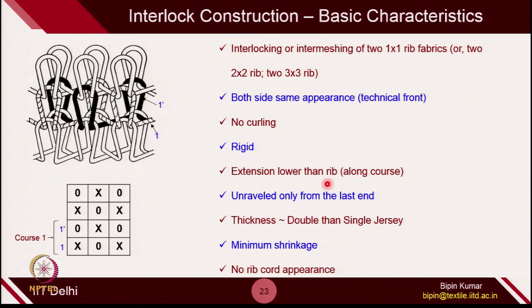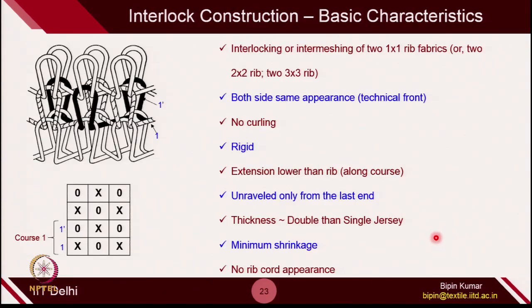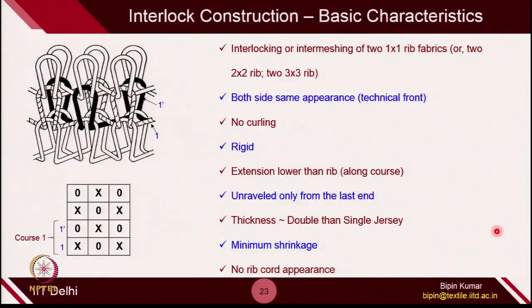Extension in interlock is much lower than rib, because of the intermeshing — each rib could not shrink in the course direction, so it cannot be extended in that direction. For unraveling, since it has the rib construction on the bottom, you cannot unravel from the first course — only the last course or topmost course can be unraveled. Thickness is double that of single jersey because there are 2 loops facing each other. Interlock has minimum shrinkage compared to all double jersey constructions. There is no rib cord appearance on the fabric — in rib construction there were vertical lines separating 2 columns, but in interlock you will not observe those.